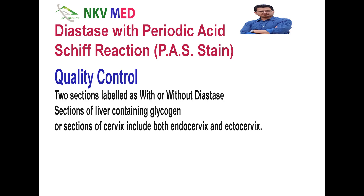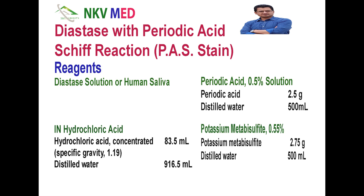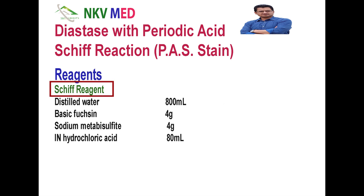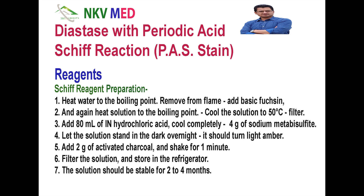For quality control, we will use tissue sections — mainly two tissue sections, either from the liver or from the cervix. The reagents from PAS you already know; all reagents from PAS will be used, and here we will add the diastase solution or human saliva. In human saliva, there is alpha amylase and beta amylase — both enzymes are present. For the revision, other reagents will be periodic acid 0.5% solution, iron hematoxylin, potassium metabisulphite, and Schiff reagent. All these reagents and how they are prepared we have already discussed in the PAS lecture.